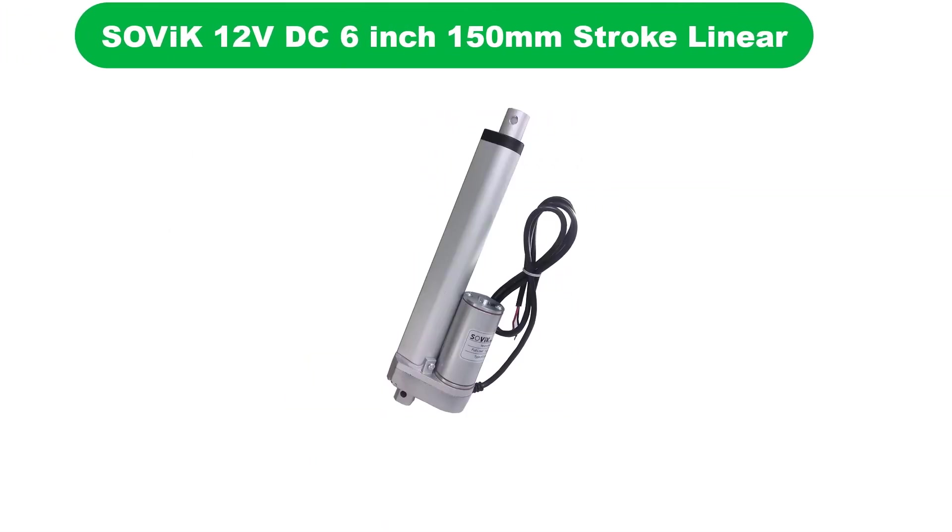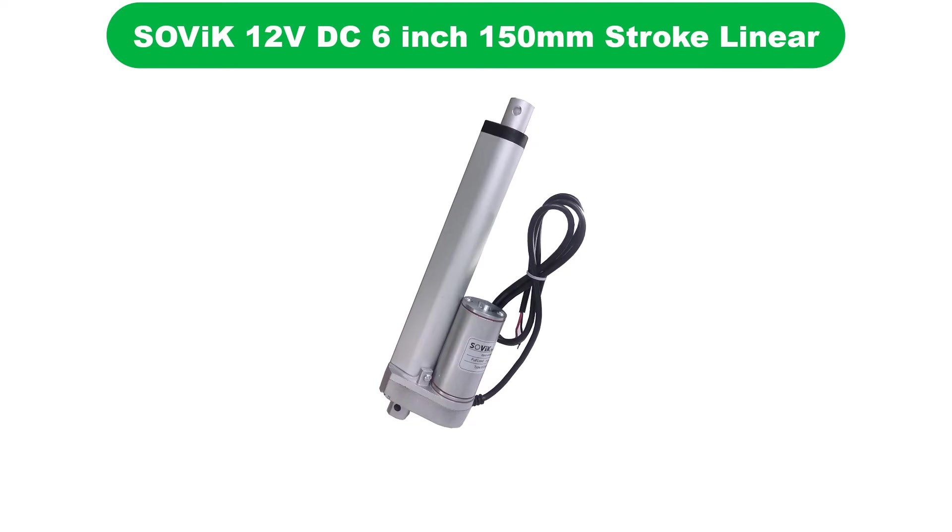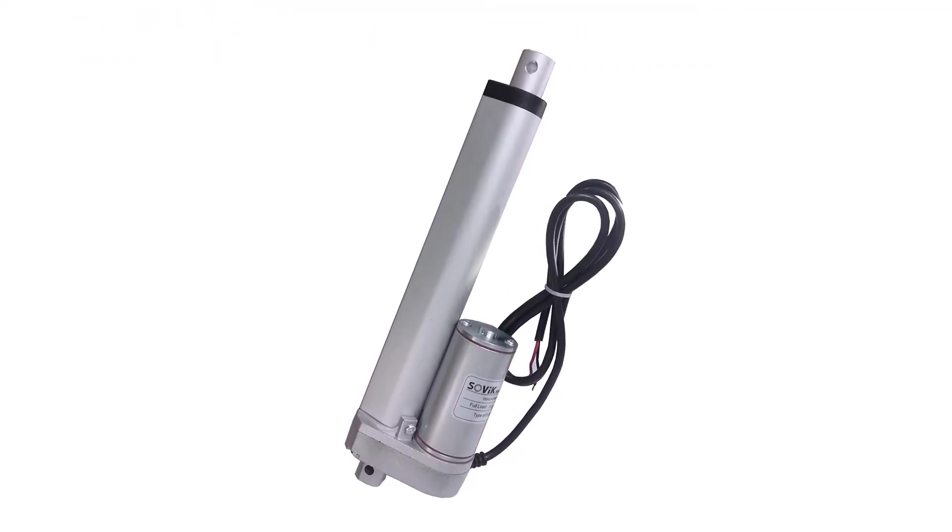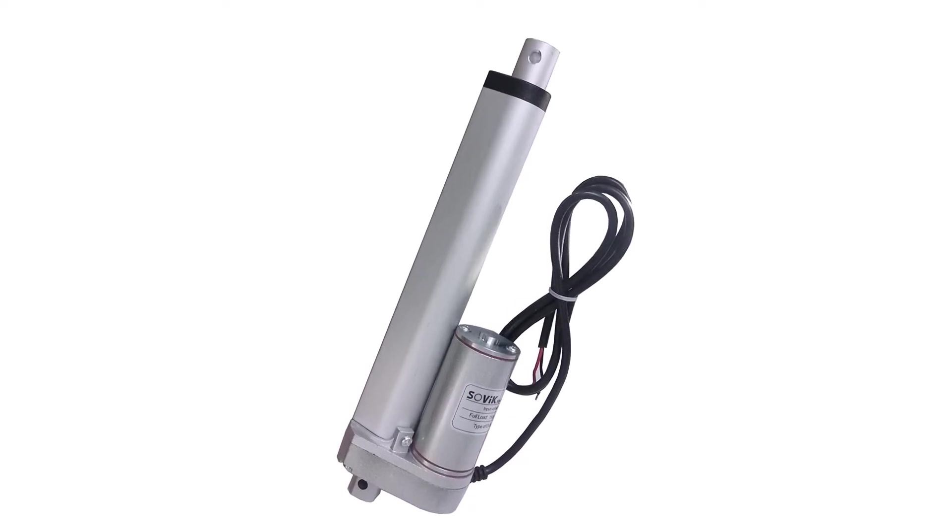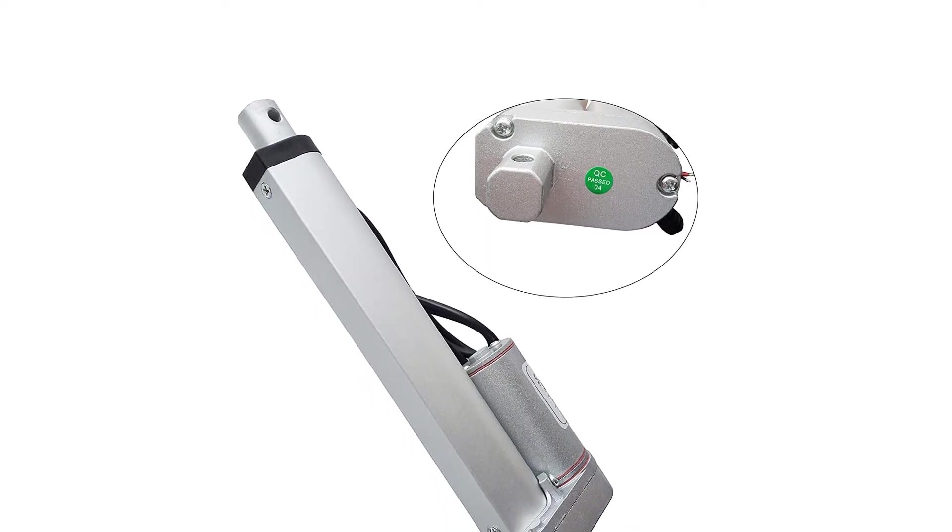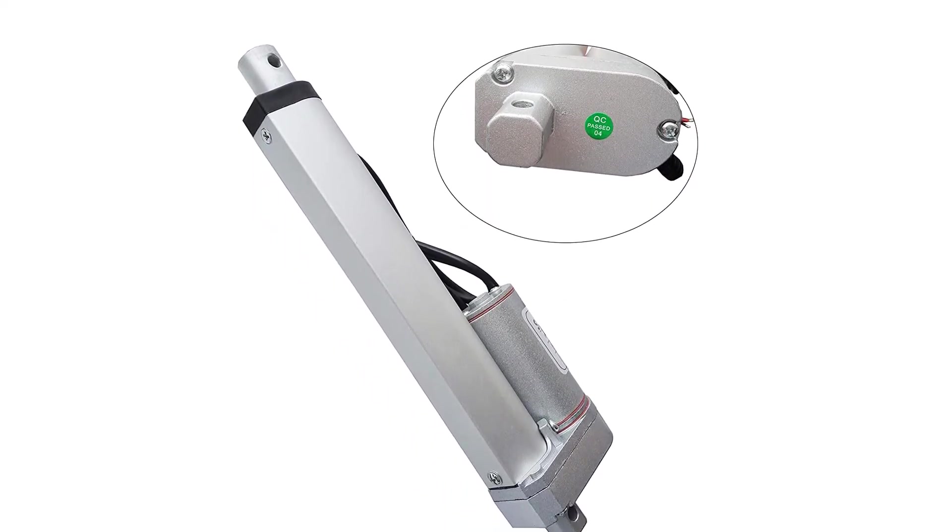Number 5. Last but not the least, our fifth best pick is Sovyk 12V Heavy Duty Linear Actuator. This is yet another new brand in the market that provides good quality products at an affordable price range. This linear actuator comes with a stroke length of 6 inches, retracted length of 10 inches and extended length of 16 inches.